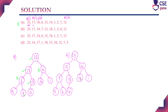Checking option B for max heap property: root node 23 has children 17 and 14 — correct. Node 17 has children 7 and 13 — correct. Node 13 has left child 12 — correct. Node 14 has children 10 and 1 — correct. Option B completely possesses the max heap property.